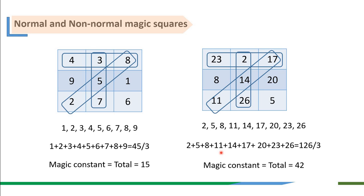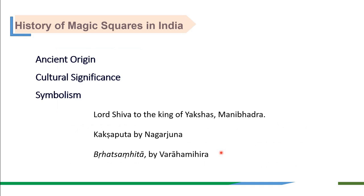Magic squares have a rich history in India dating back to ancient times and are part of the country's mathematical heritage. They were utilized in religious rituals, architectural planning, and historical text constructions, demonstrating their deep integration into Indian culture.